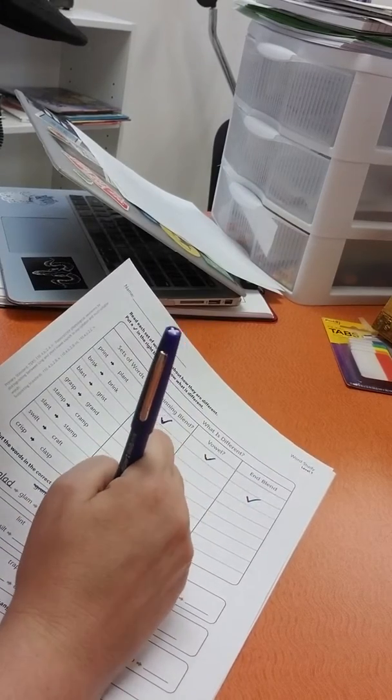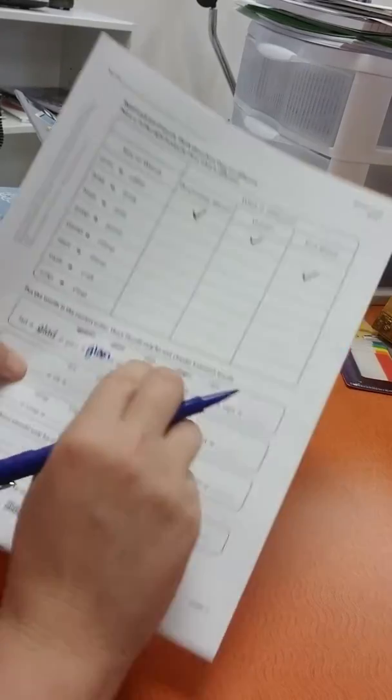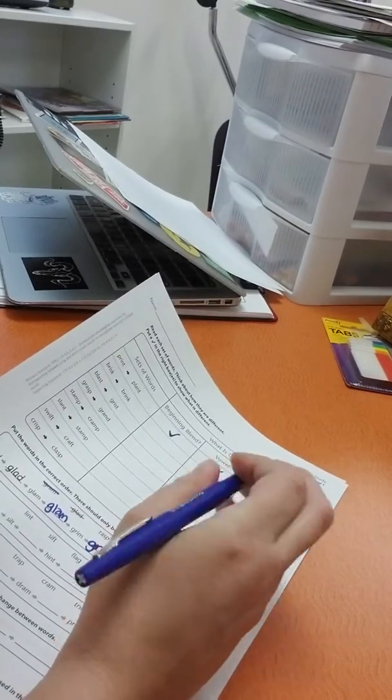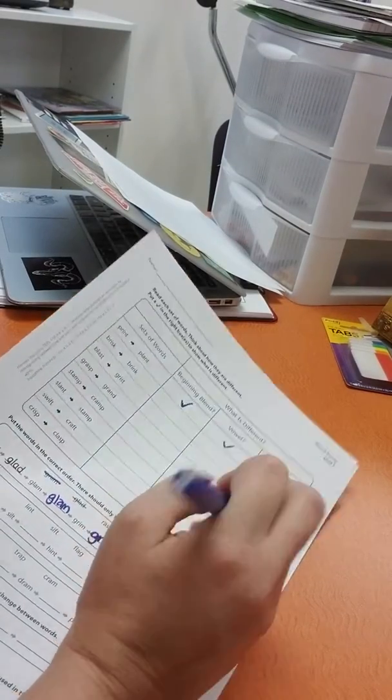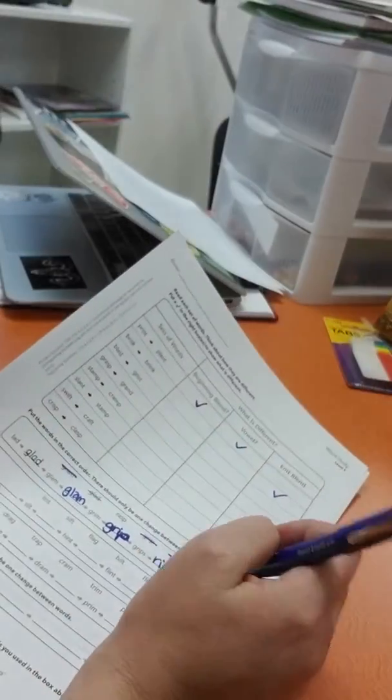Then we have grim to grip because we'd only change the M to the P. Whoops, not grips. Grip. Then we have grips to rips because we get rid of that G. Then we have wraps to rasp because we just switched the letters.